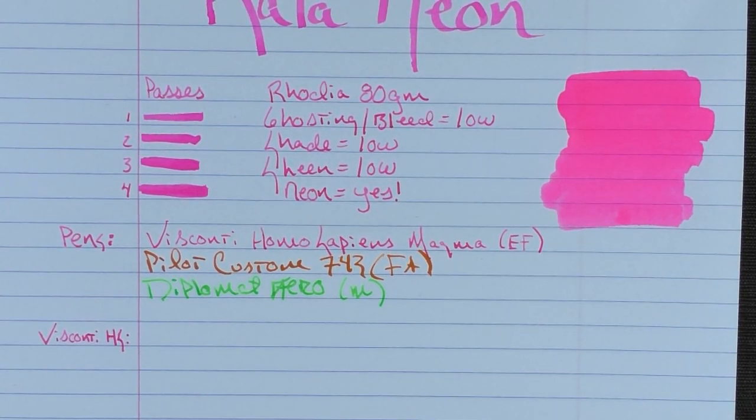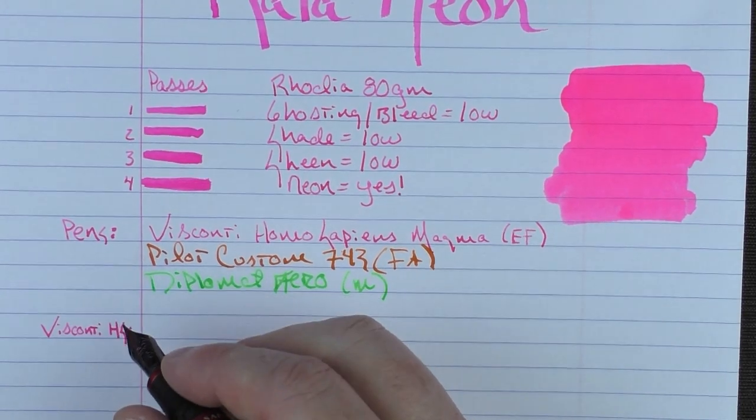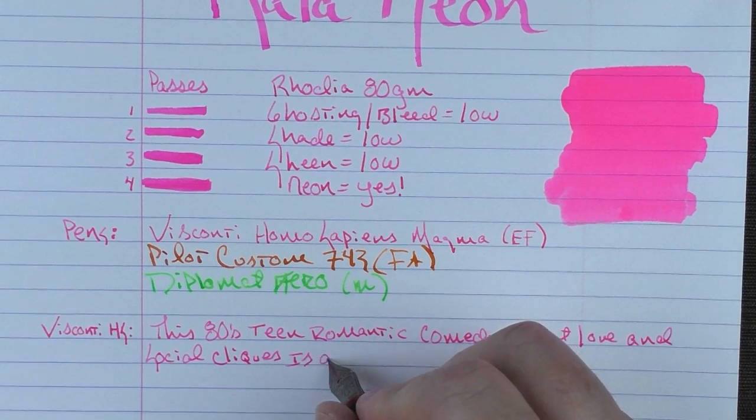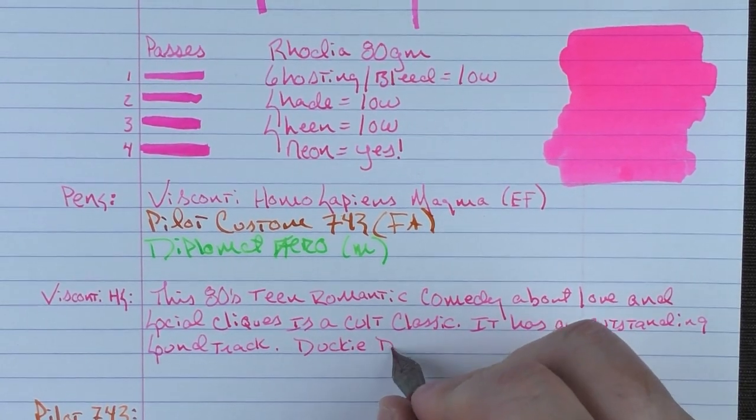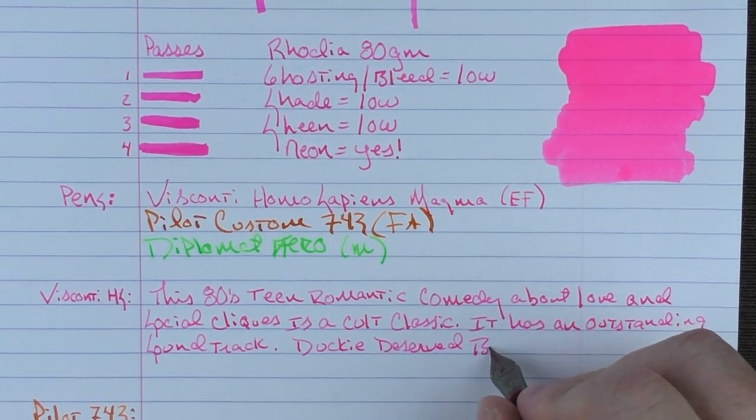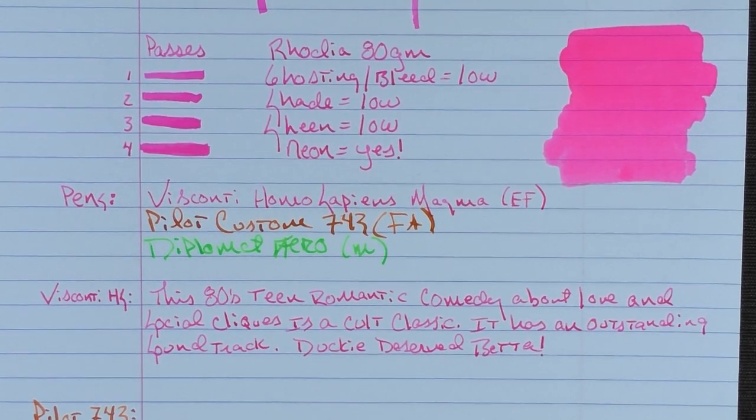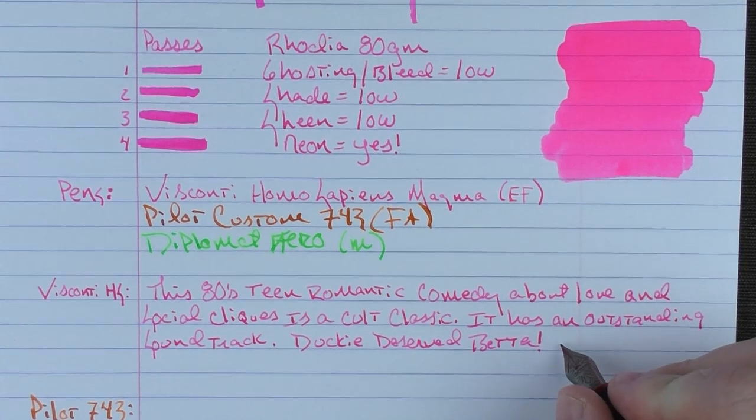If you've watched any of my ink reviews, you know that typically I tie in one or more movies into the writing sample. For this particular review, I thought I would tie in a movie which relates to the color I'll be using. I'm going to write the text and then you can guess what movie the reference and the reference really shouldn't be that hard. So with the Visconti, we have pink. I said this 80s teen romantic comedy about love and social cliques is a cult classic. It has an outstanding soundtrack that holds up to this day and Ducky deserved better. And that movie is Pretty in Pink.